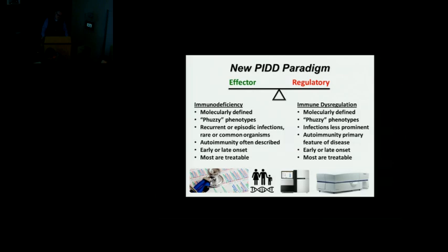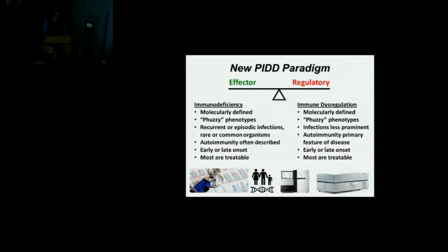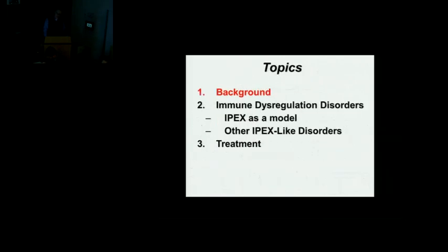We're now finding molecular defects where patients are susceptible to common infections — recurrent strep, staph, or candida — not just rare or opportunistic infections. Autoimmunity is now quite frequently described in patients with primary effector defects because we're keeping patients alive longer. On the immune dysregulation side, the phenotypes are fuzzy too — patients present with autoimmunity as their primary presentation. These patients used to live in rheumatology, GI, and pulmonary clinics. The clinical heterogeneity can be huge.